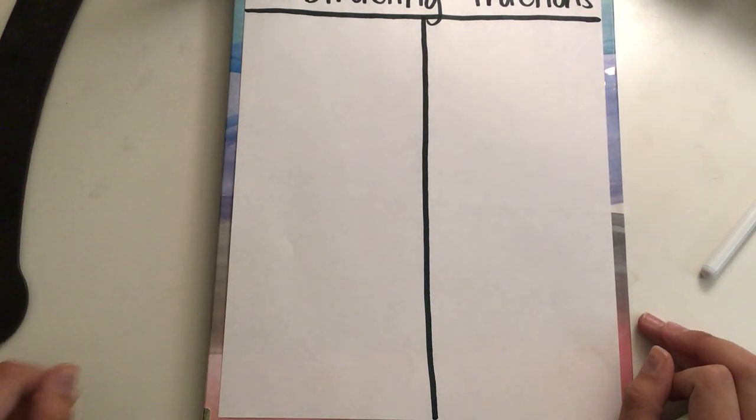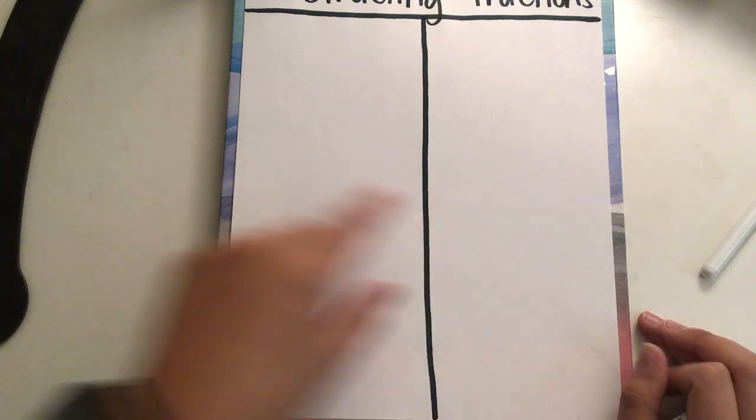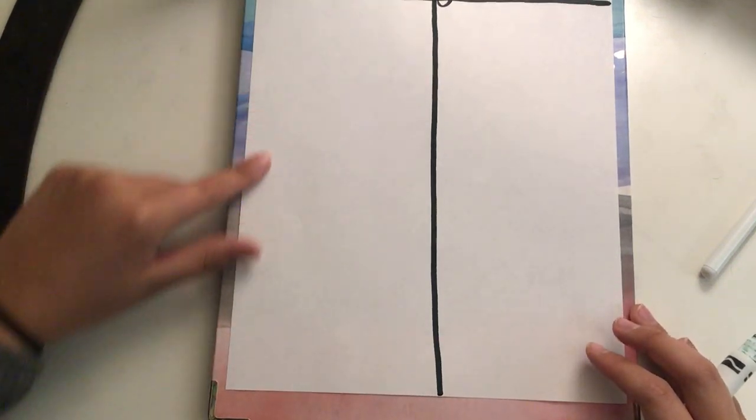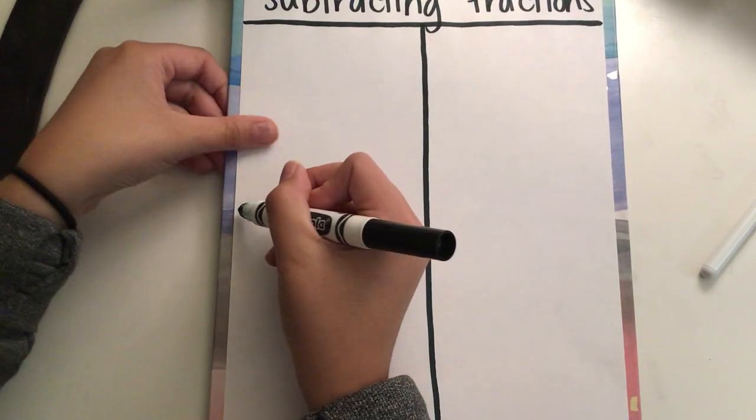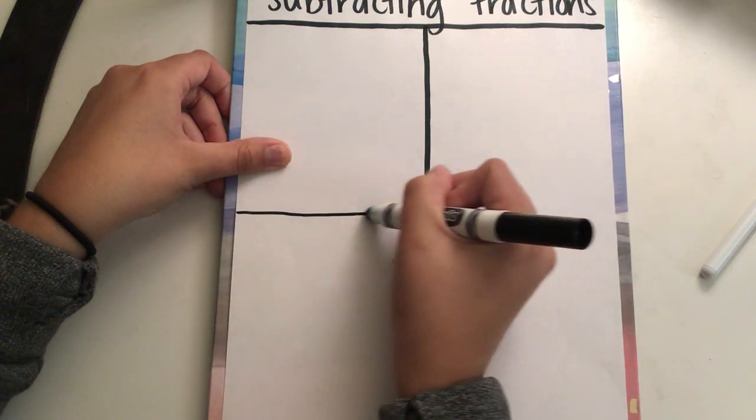And then we just need one more line going across this way. So about halfway through here, we're going to find a spot and draw a line that goes across here.